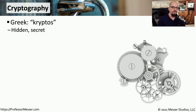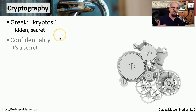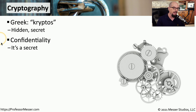The word cryptography is derived from the Greek word cryptos, which means hidden or secret. That's certainly how we use cryptography in IT security. This includes confidentiality, which means we can make information secretive. We can encrypt data so that nobody else can see that data.